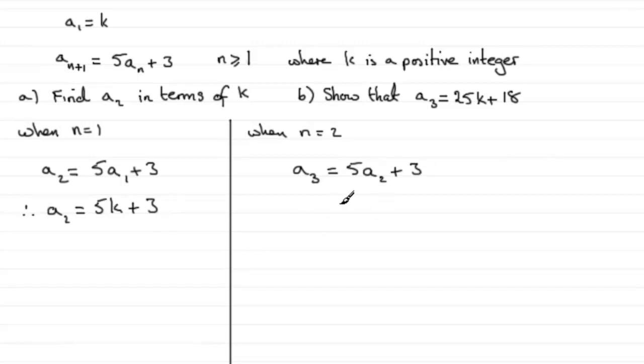Well, we've just worked it out—it was 5k plus 3. So that's going to be 5 multiplied by 5k plus 3, and then add the 3 on the end here.